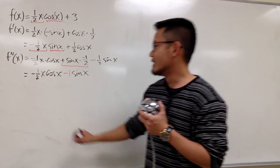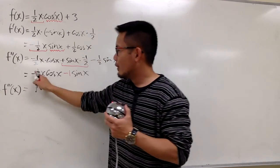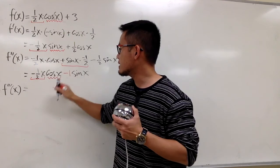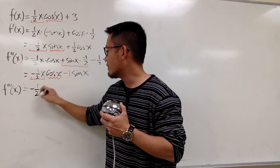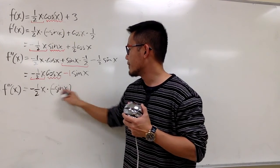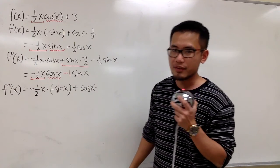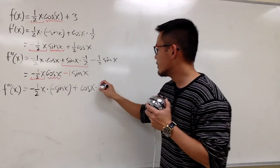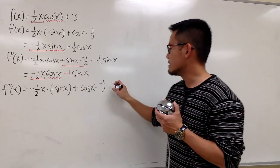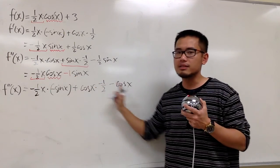Now the third derivative — let's put down f triple prime. Once again we have to use the product rule. Negative ½x is the first and cosine x is the second. We write down negative ½x and multiply by the derivative of cosine, which is negative sine x, then plus the second function, cosine x, multiplied by the derivative of the first, which gives us negative ½. Then the derivative of negative sine x is just negative cosine x, because the derivative of sine x is cosine x.